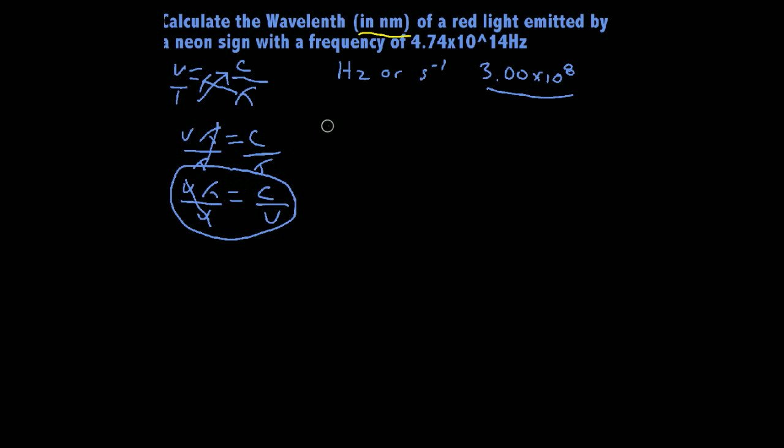So we're going to solve for wavelength. We know the speed of light. Wavelength is going to equal the speed of light, 3.00 times 10 to the 8th, over our frequency, which is 4.74 times 10 to the 14th hertz. This is meters per second. This is going to cancel out and give us an answer in meters because hertz and per second mean the same thing. These two are going to cancel out. We're going to be left with an answer in meters.